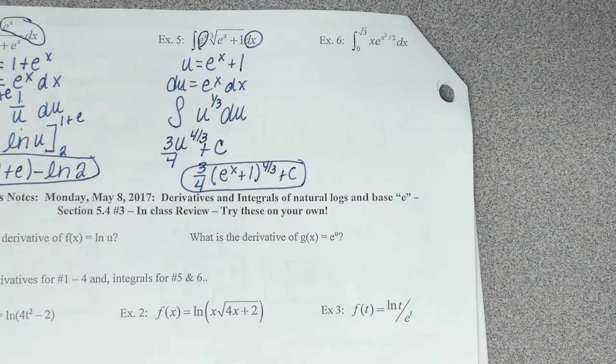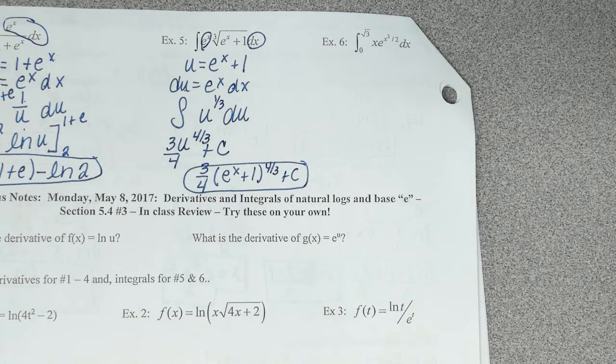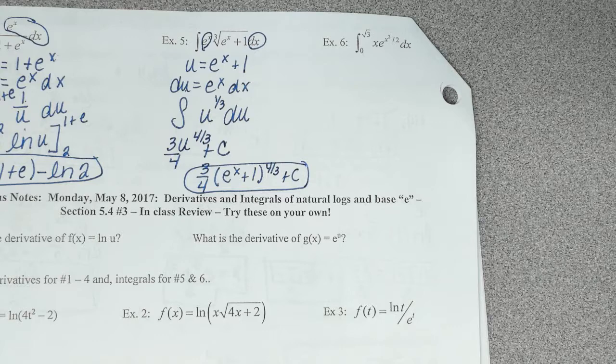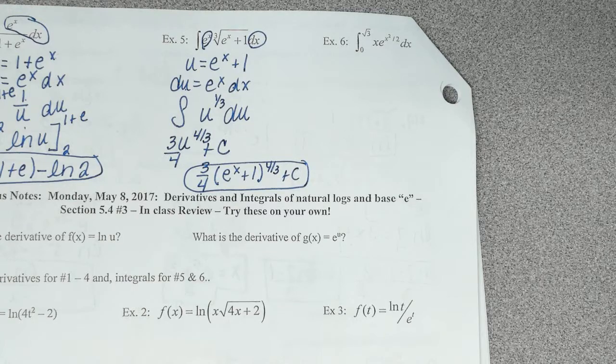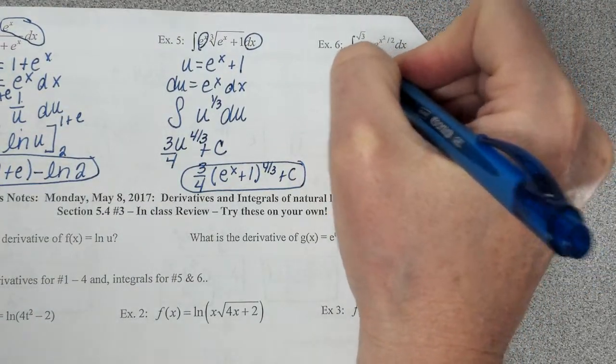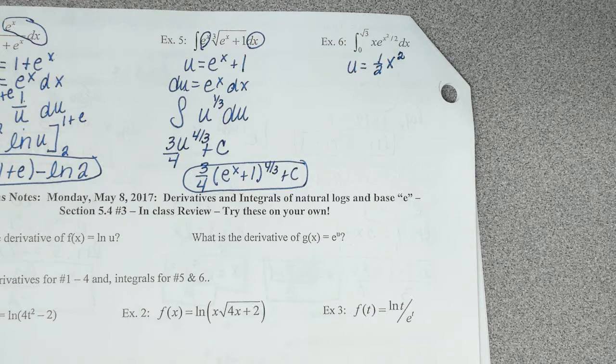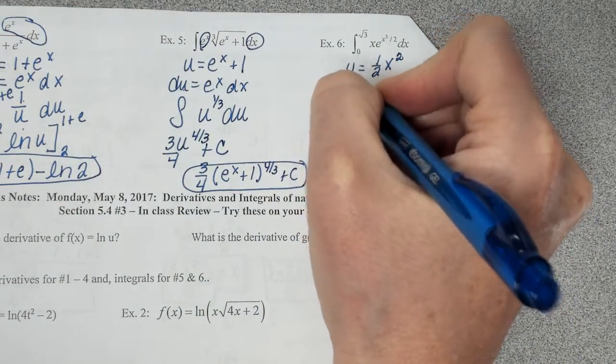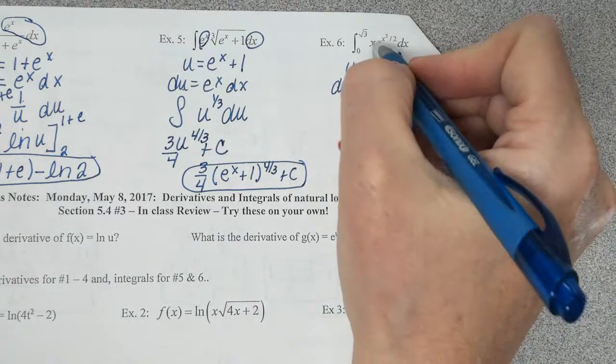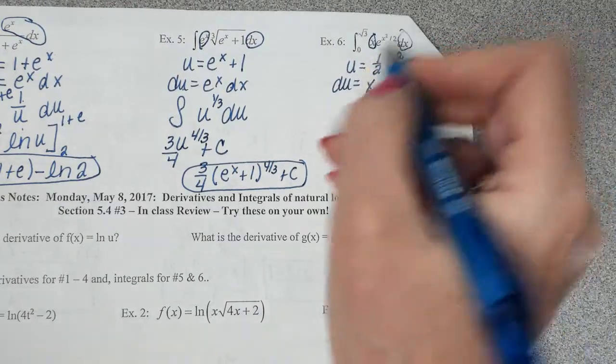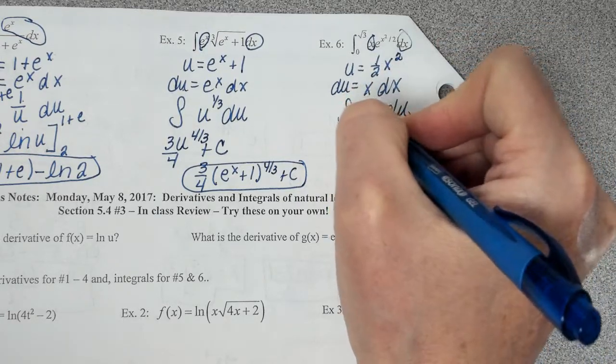Can't be used. All right. Example 6. Again, we're thinking u can be x, you could be e to the x squared over 2, or you could just be x squared over 2. What's going to be the best thing? What did I say we're going to let it equal if the exponent? So we're going to let u equal 1 half x squared. 1 half x squared is the same thing as x squared over 2. So now I'm going to take that derivative. 1 half times 2 is 1x dx. That's perfect because that's what I've got here is an x dx.